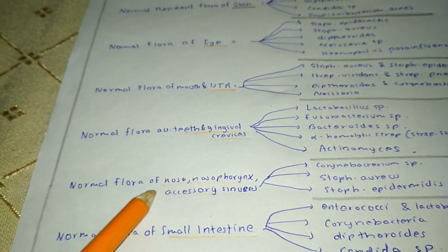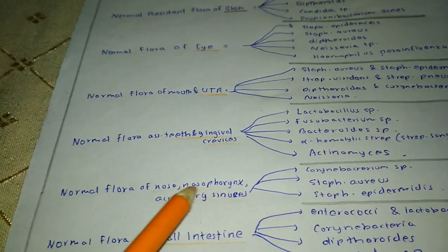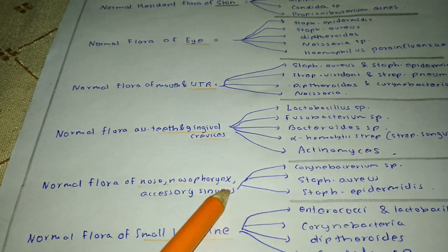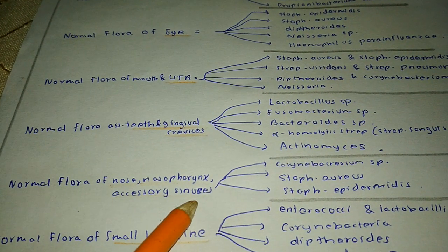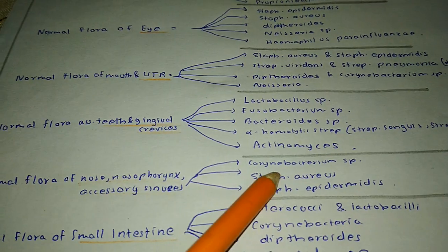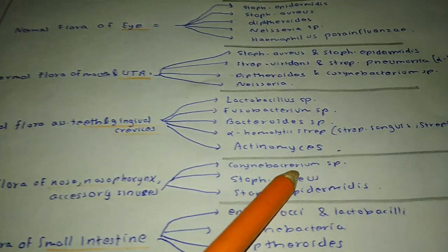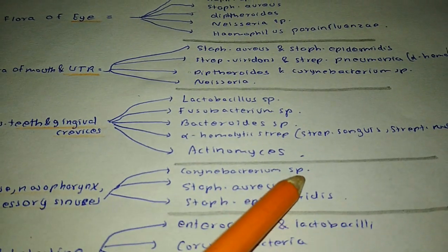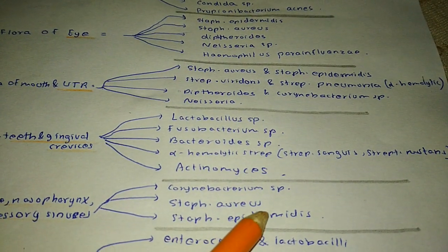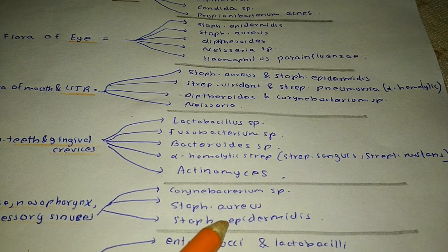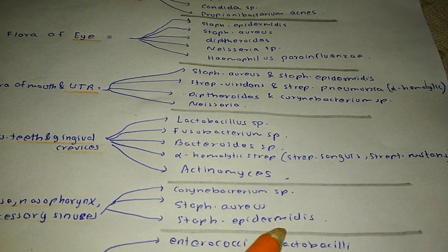The normal flora of the nose, nasopharynx, and accessory sinuses includes Corynebacterium species, Staphylococcus aureus, and Staphylococcus epidermidis.